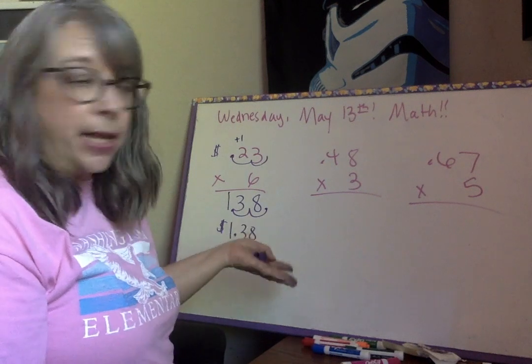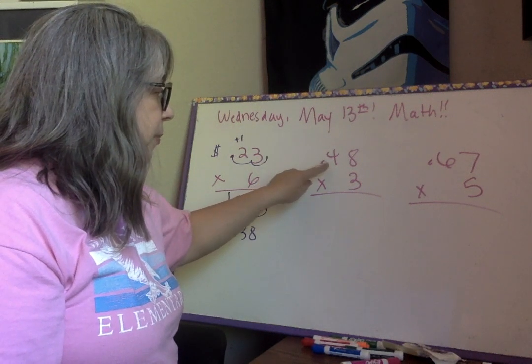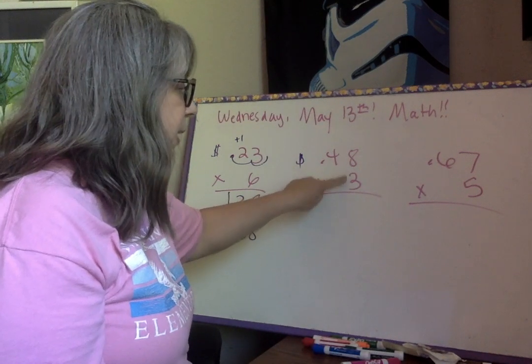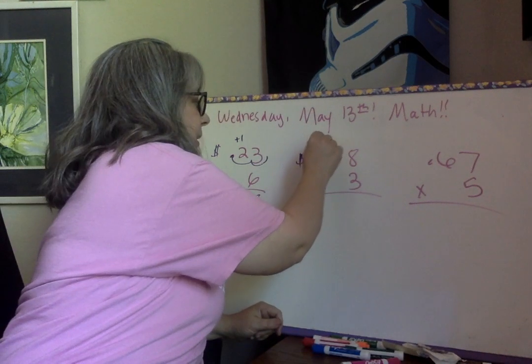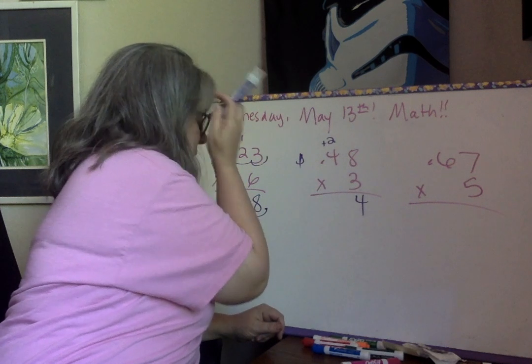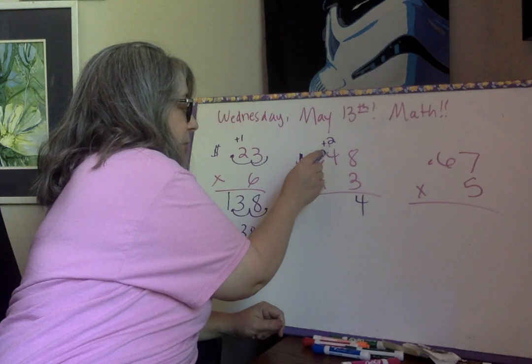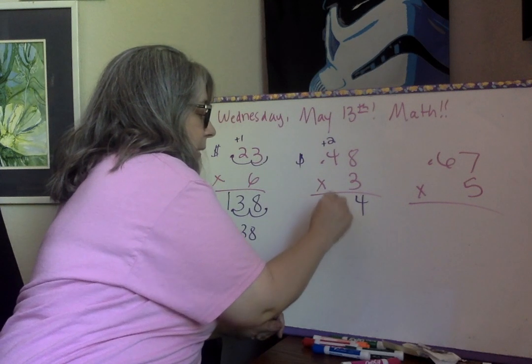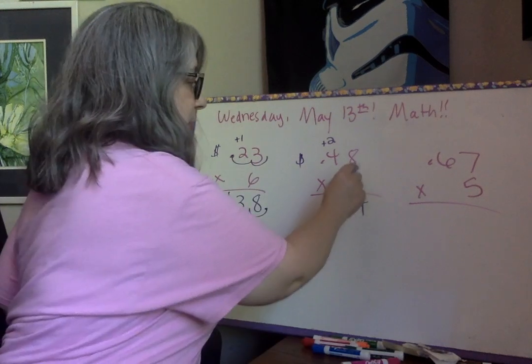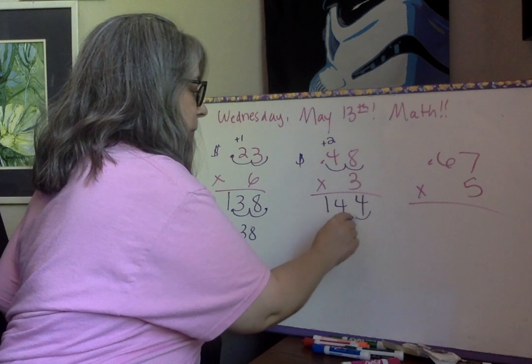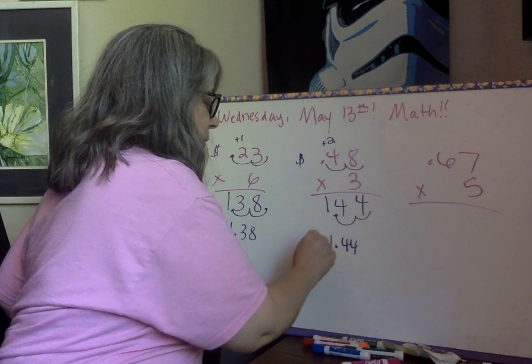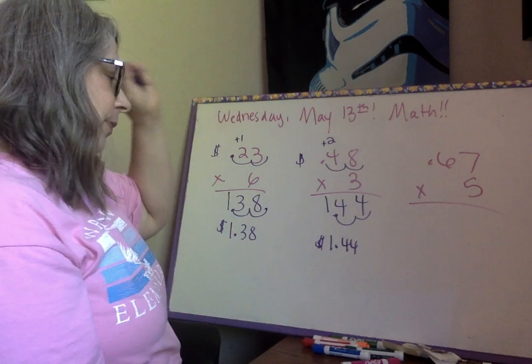Let's practice another one. 48 cents times three. All right. So three times eight is 24. So two, four. Three times four is 12, plus two is 14. How many hops are we going to make? Two. We're going to make two hops. One, two, one, two. So our answer is $1.44.